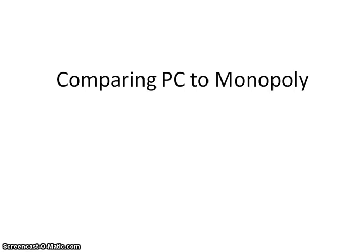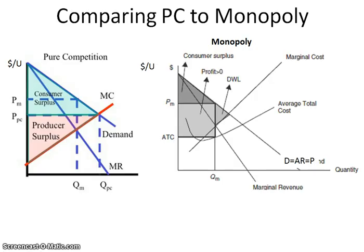In this screencast, we are going to compare the perfectly competitive firm graph to the monopoly graph. This one's really important. This is something that can be asked on FRQs, and so you want to be able to recognize how you could pull a PC graph out of a monopoly, and then also be able to compare the different efficiencies that go along with it.